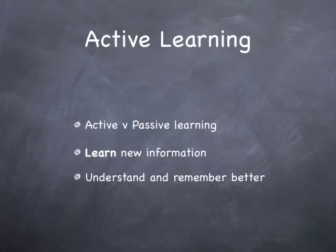Too often, students take the time to read something like a textbook chapter and afterwards realize they cannot recall much of the information. This is because reading by letting your eyes glance over the printed word is known as passive learning. You are waiting for the information to present itself. Unfortunately, that rarely happens as the brain is not focused on achieving any specific learning goals. A better alternative is active learning.